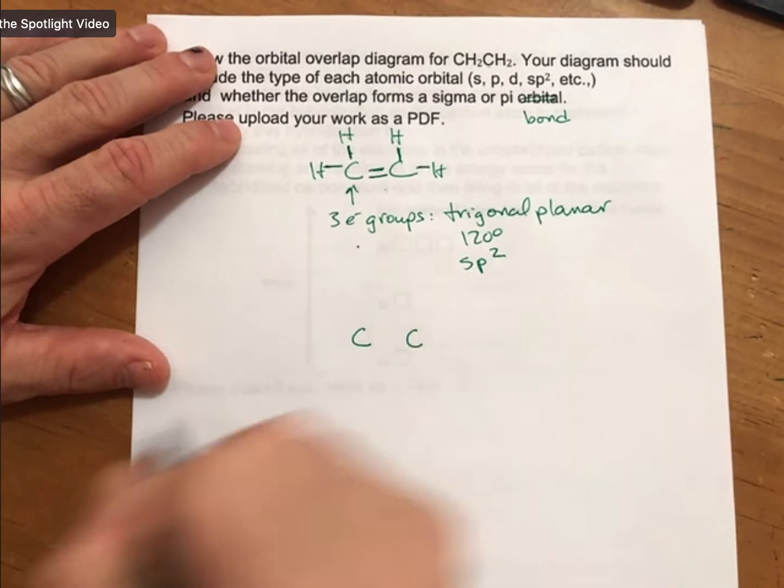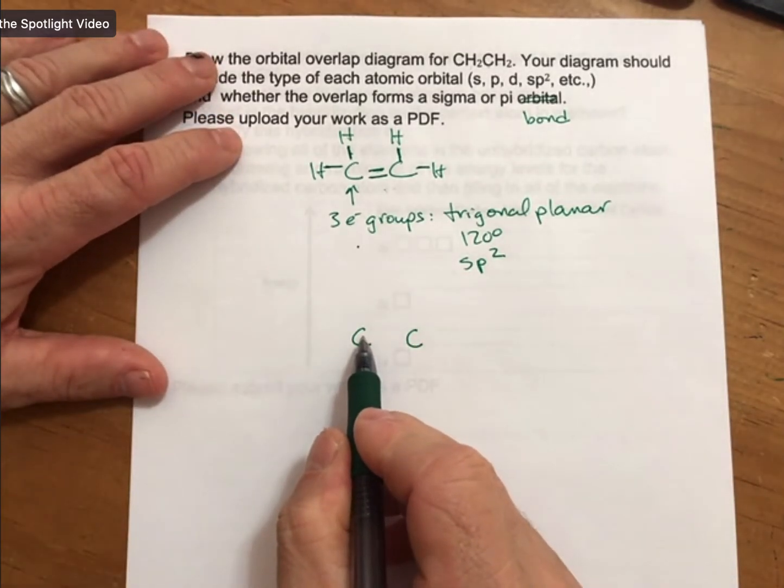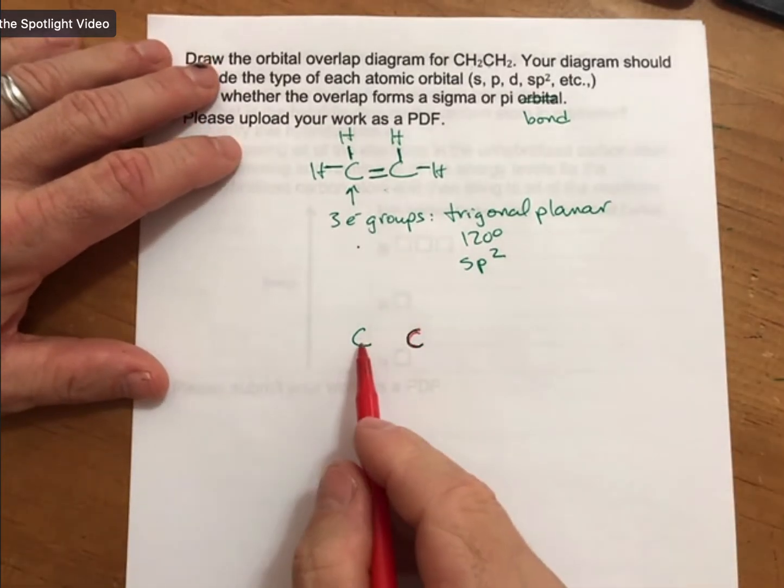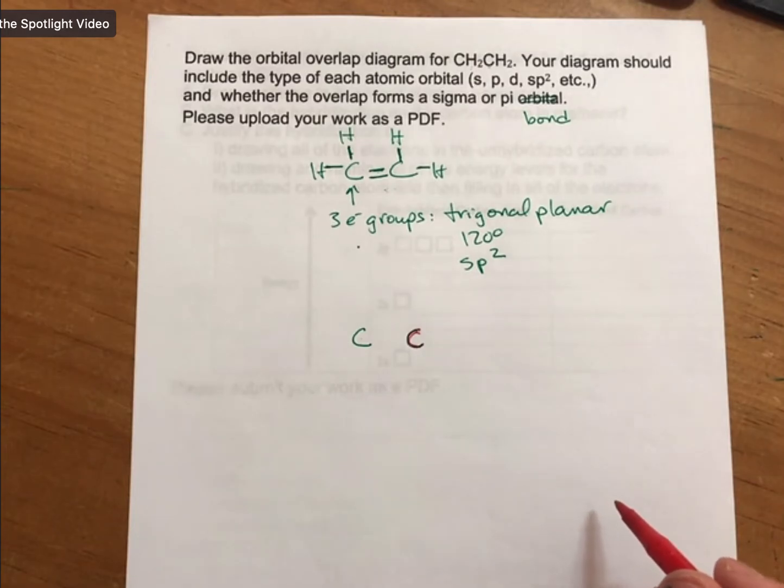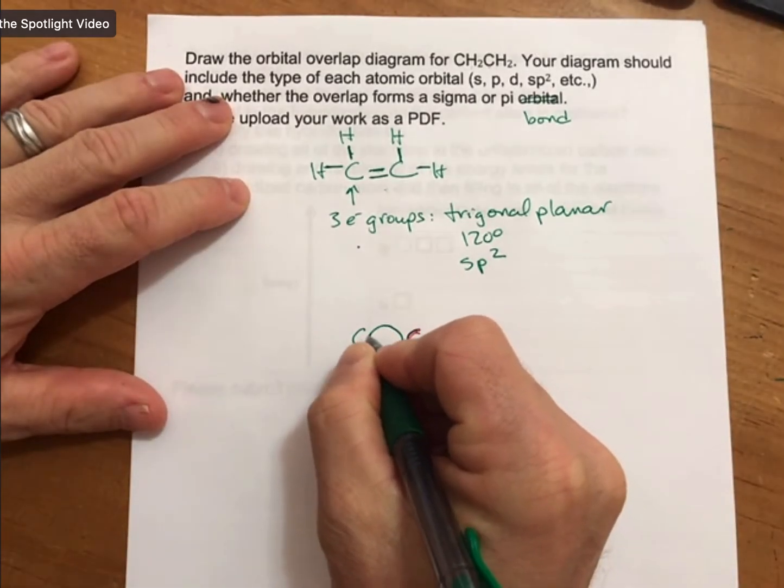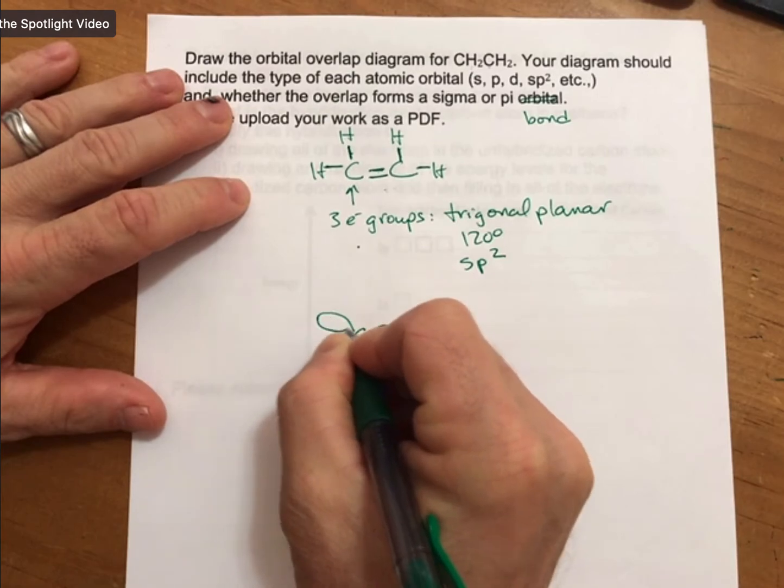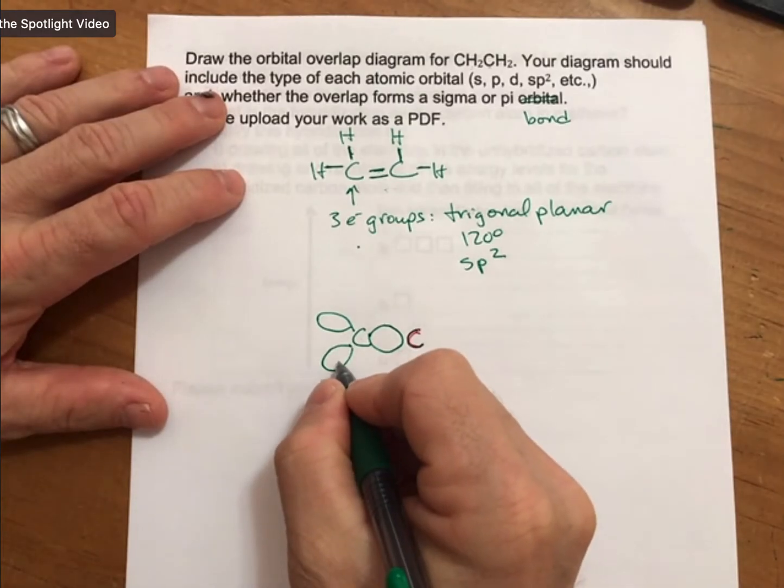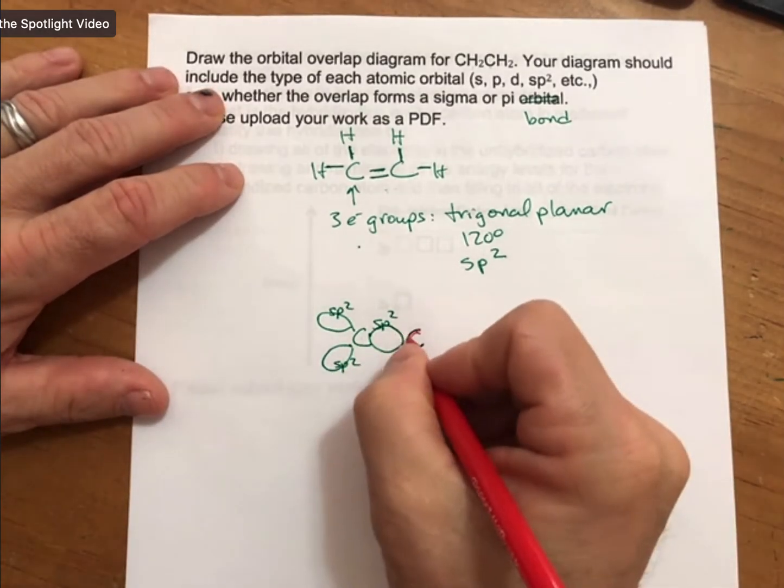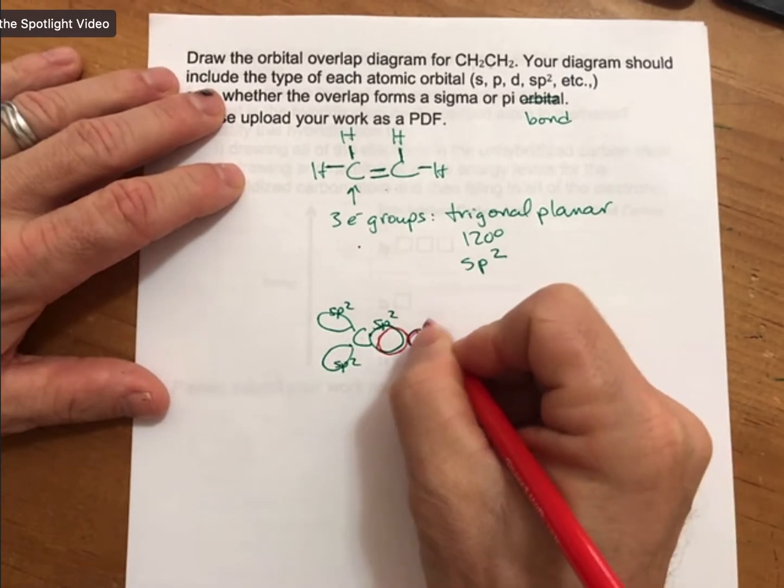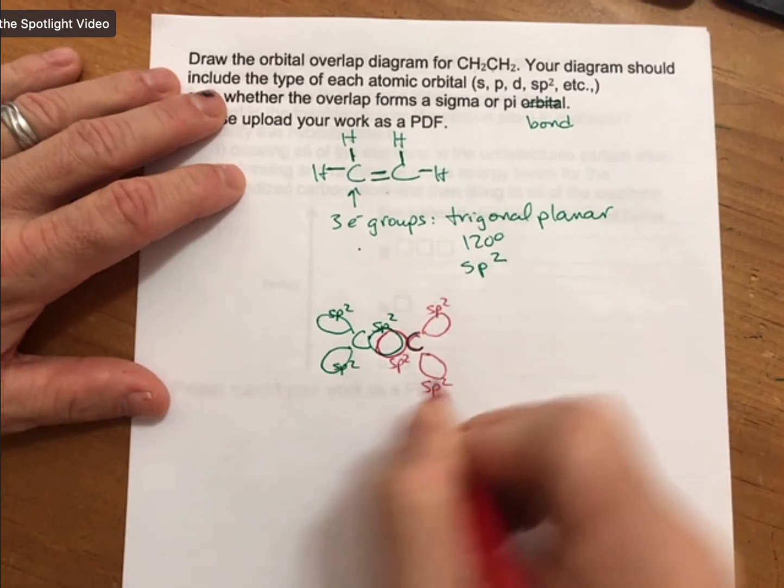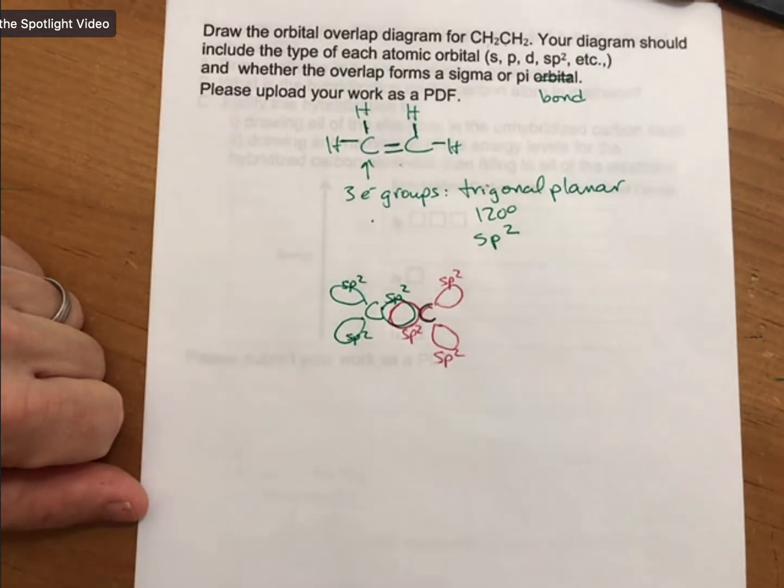So now what I'm going to do, just like the last time, is I'm going to draw each of my carbons, and again, I will try and color code them. And each of these carbons has 3 sp2 hybridized bonds. This is hopefully going to be a little better picture. 1, 2, 3. And I'll label these sp2, sp2, sp2. For the other carbon, that carbon also has 3 sp2 hybridized orbitals.